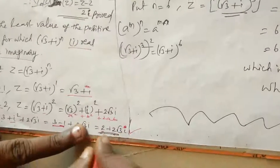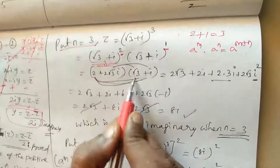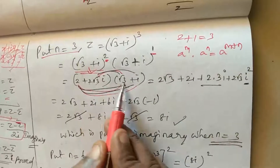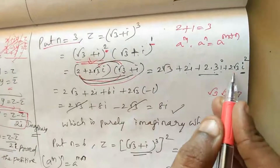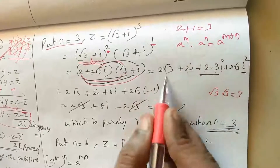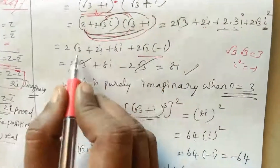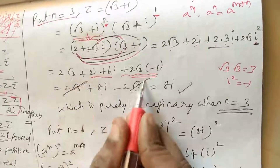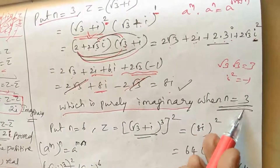Multiplying (2 plus 2√3·i) by (√3 plus i): 2·√3 plus 2i plus 2√3·i·√3 plus 2√3·i·i. The last term gives 2√3·i^2 equals 2√3 times minus 1 equals minus 2√3. The real parts cancel, leaving a purely imaginary result. Therefore n equals 3 gives a purely imaginary number.